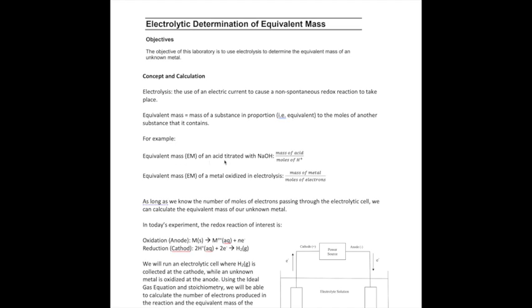if I want to know the equivalent mass of an acid that's being titrated with sodium hydroxide, I can calculate it using the mass of the acid divided by the moles of the H plus, which comes from the acid that reacts with the NaOH. The H plus is part of the acid itself.